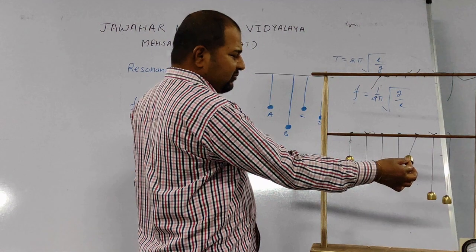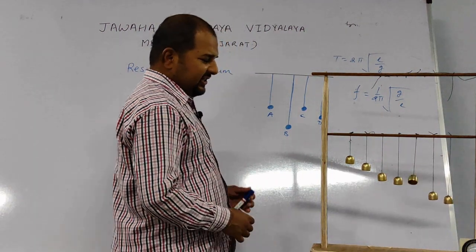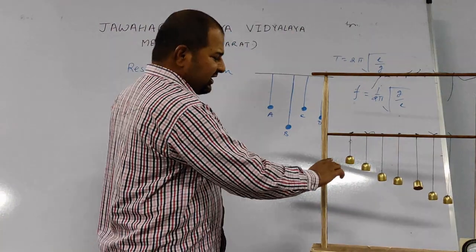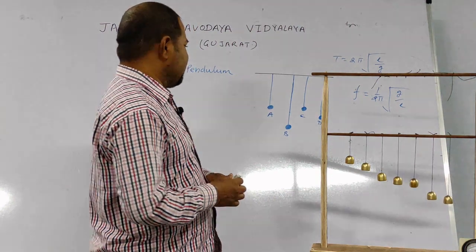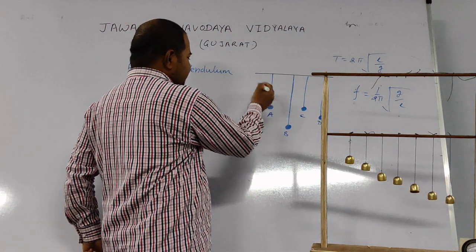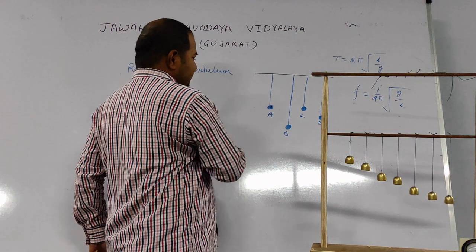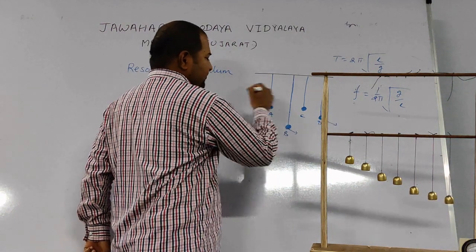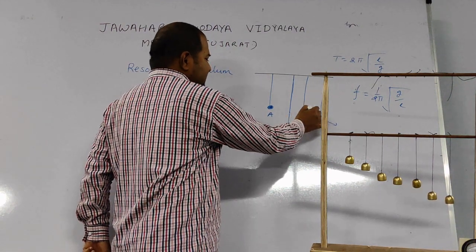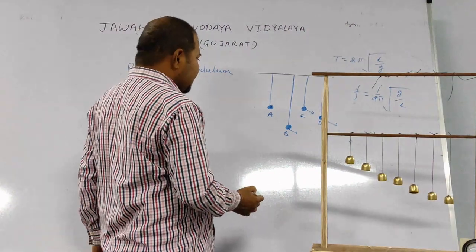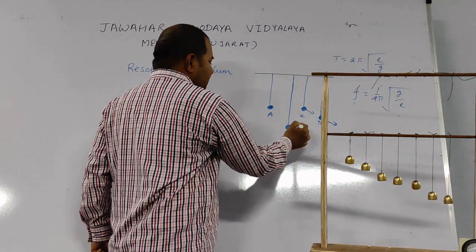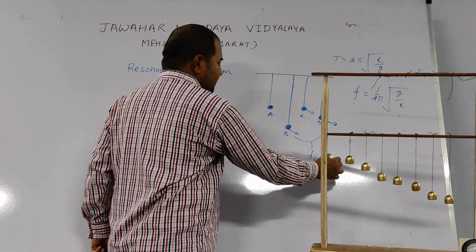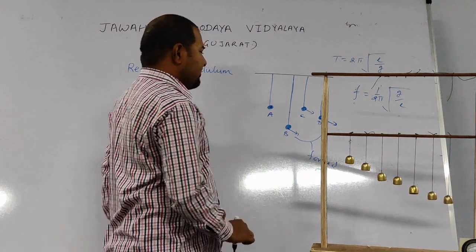Let's first see the experiment. If we displace this pendulum from its mean position, we see that all pendulums start to oscillate. Their oscillations are known as forced oscillations. If pendulum A starts to vibrate, then B also starts to vibrate, D also starts vibration, and C also starts vibration or oscillation. The oscillations of B and D are known as forced oscillations or forced vibration.